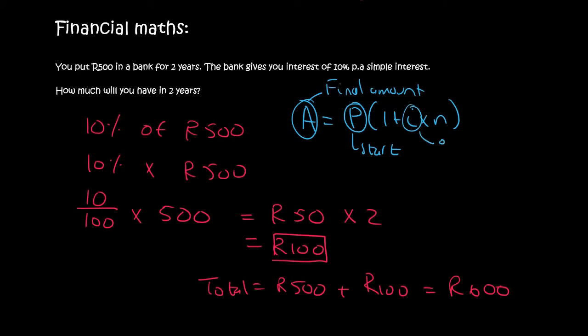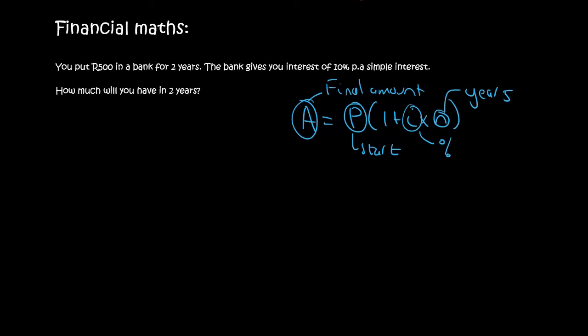Check how cool this is. P, well, that's your starting amount. You started with 500 Rand. Your percentage is 10%. Now, you can either type in 10%. Some calculators have a percentage feature. The most popular calculator that students use in South Africa is the Casio.